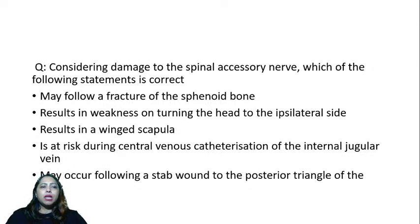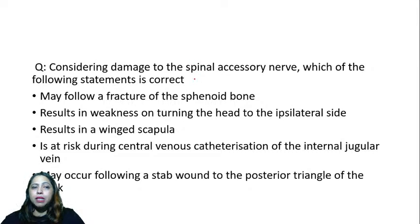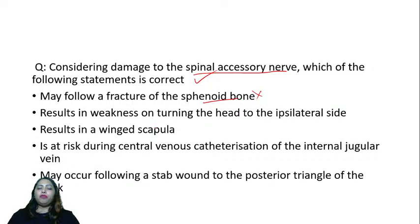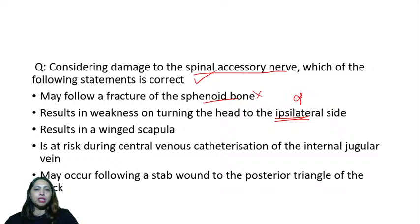Next question: considering damage to the spinal accessory nerve, which statement is correct? It does NOT follow fracture of the sphenoid bone. The statement about weakness turning the head to the ipsilateral side is wrong — it should be the contralateral side. Winging of the scapula is caused by long thoracic nerve damage, not spinal accessory nerve damage.